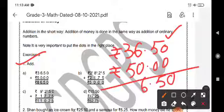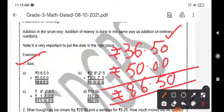Six plus zero is six. Three plus five is eight. So, you have to write then the symbol. 86.50 rupees is the sum.